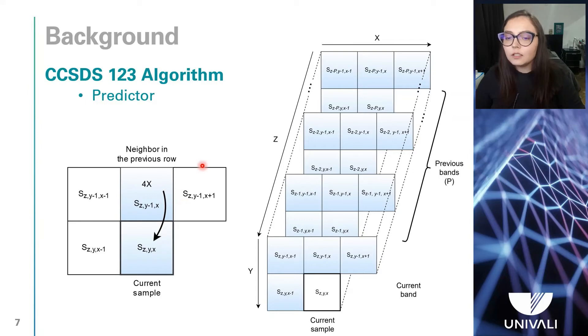After that, the local difference, that is the subtraction between the local sum and 4 times the current sample, will be calculated. The third step is to make a weighted sum between local differences and current band weights. These weights are initialized when the system is started, and it is updated after the processing of each sample.